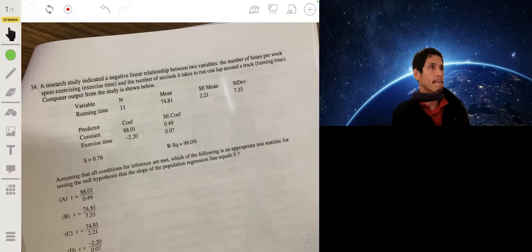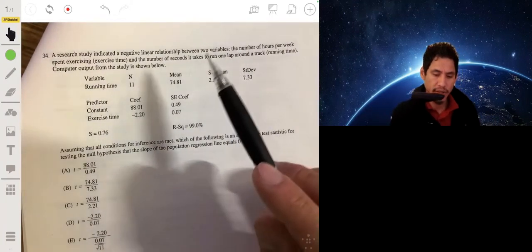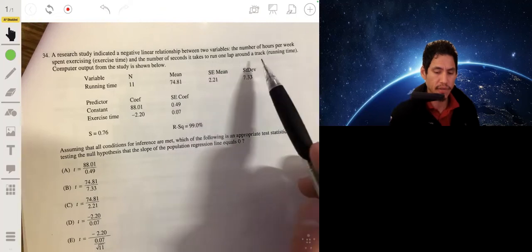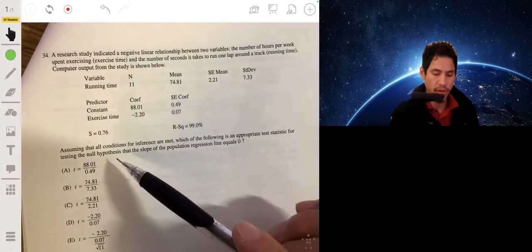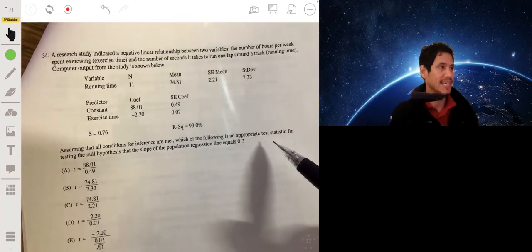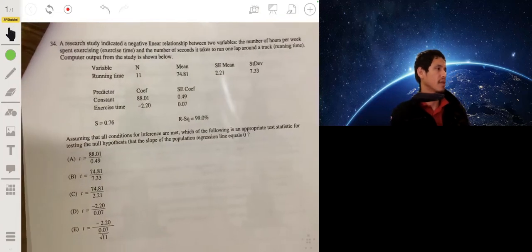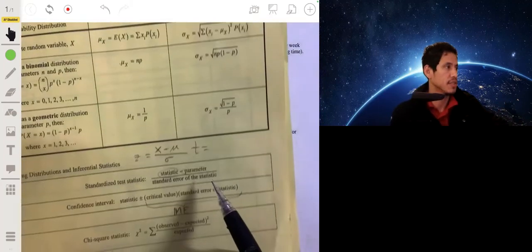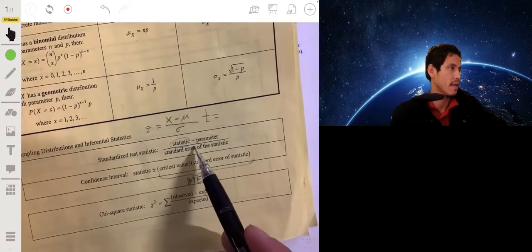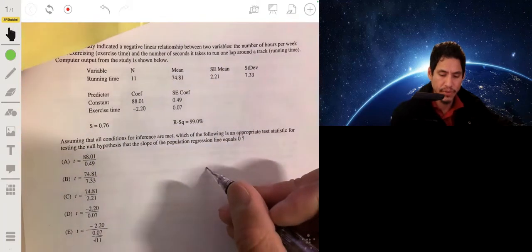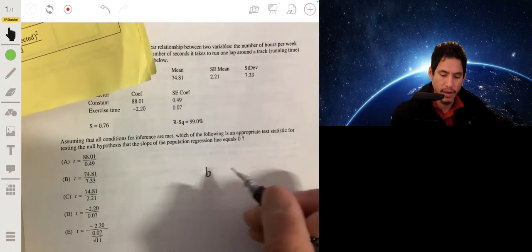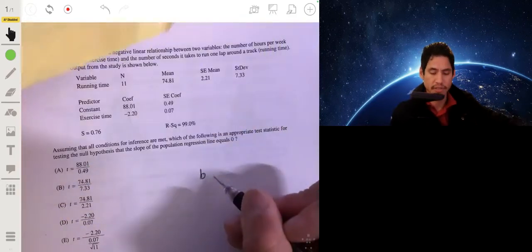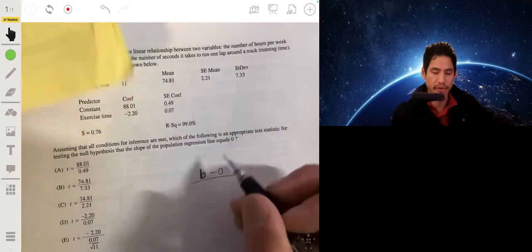Alright, number 34. A research study indicated a negative linear relationship between two variables: the number of hours per week spent exercising and the number of seconds it takes to run one lap around the track. Here's the data. If we assume all the conditions for inference are met, which of the following is the appropriate test statistic for testing the null hypothesis that the slope of the population regression line equals zero? Okay, so let's go back to our formula sheet. Remember we're trying to find the standardized test statistic. It's going to be we'll have b, and if we're saying that the parameter is zero, just minus zero on top. You'll just have your sample estimate of the slope, and then remember it's over the standard error of the statistic.